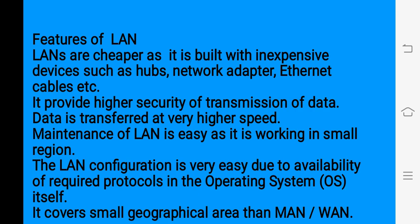LANs are cheaper because their setup is very inexpensive — we only need some inexpensive devices. It also provides high security of data transmission. Local area network is set up in a building, so security of data is higher than wide area network or metropolitan area network. The data transfer rate is very high in LAN because the distance is very small. Maintenance and configuration of LAN is also very easy, because the protocols required are already available in the operating system.